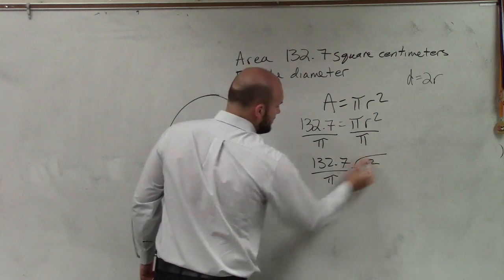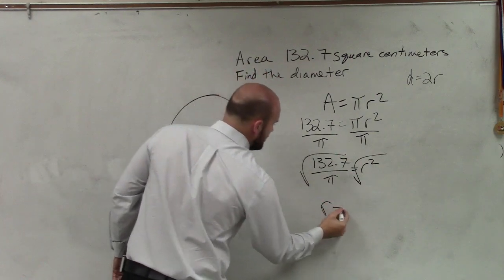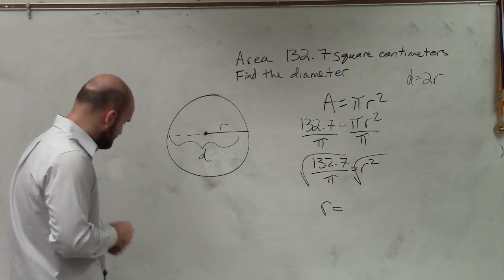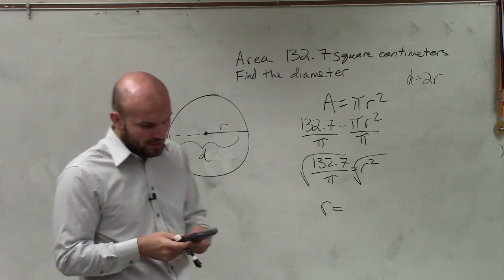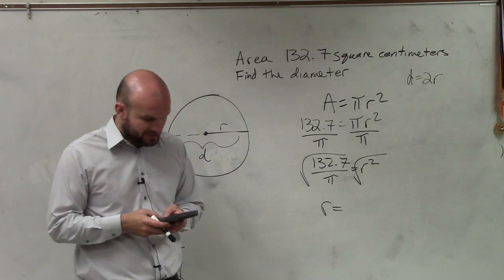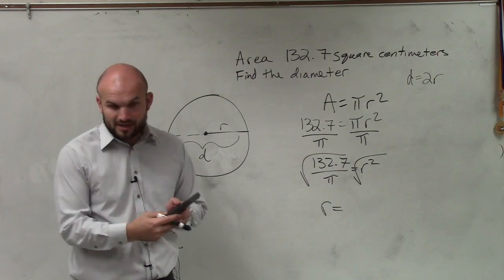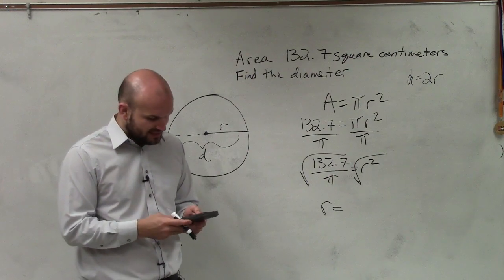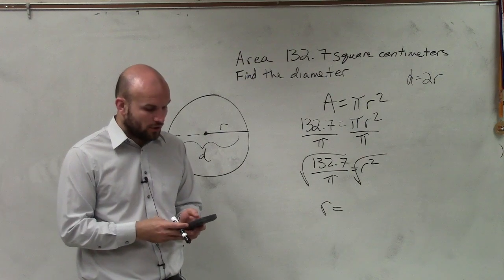Then to undo r squared, I take the square root of both sides. So r equals... Now remember, I don't want you to abbreviate this. Just take 132.7 divided by pi symbol in your calculator, then take the square root of that whole answer.